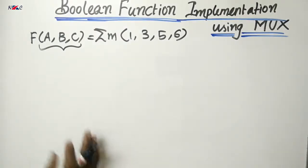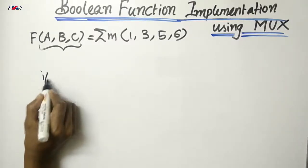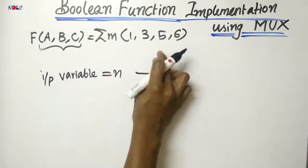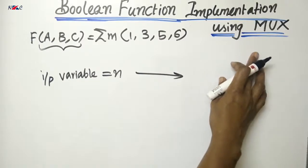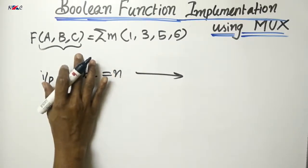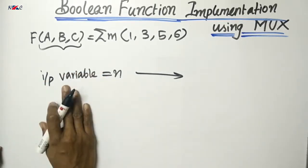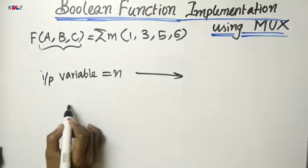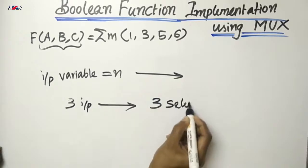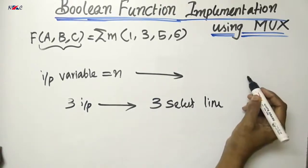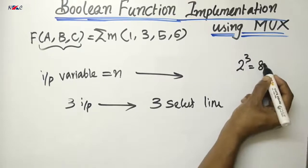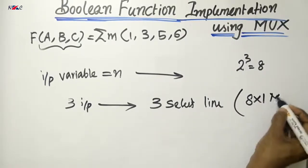First method: if the number of input variables is equal to n, we can implement the function by using a multiplexer which has n select lines. Since we have 3 input variables, I can choose a multiplexer with 3 select lines. With 3 select lines, the number of inputs is 2 raised to 3, which equals 8. So the multiplexer will be an 8-by-1 MUX.